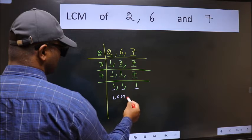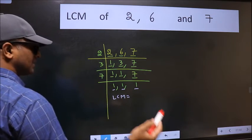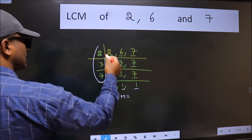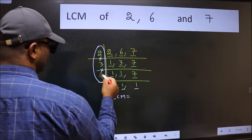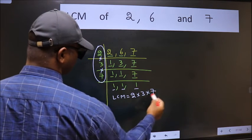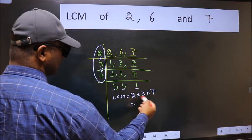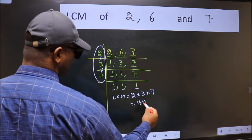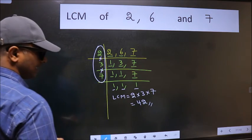So our LCM is the product of these numbers. That is 2 into 3 into 7. When we multiply these numbers, we get 42. This is our LCM.